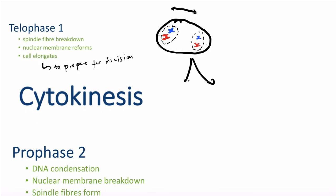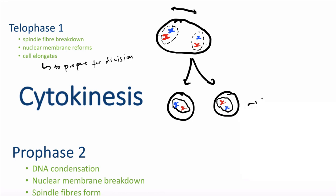In cytokinesis, the cell splits into two separate cells — the cytoplasm is divided, and the DNA is now surrounded by a new nucleus in each cell. Now, these cells are already haploid, because there's only one type of genetic material in each. People sometimes get confused because with 23 pairs and two sister chromatids each, it seems like there are 46 chromosomes — but these are identical copies, so there is still only one type of genetic material. The cell is haploid, not diploid.